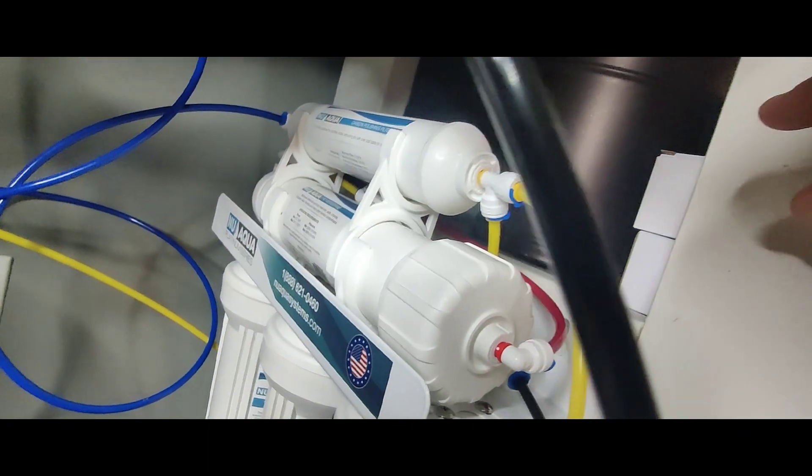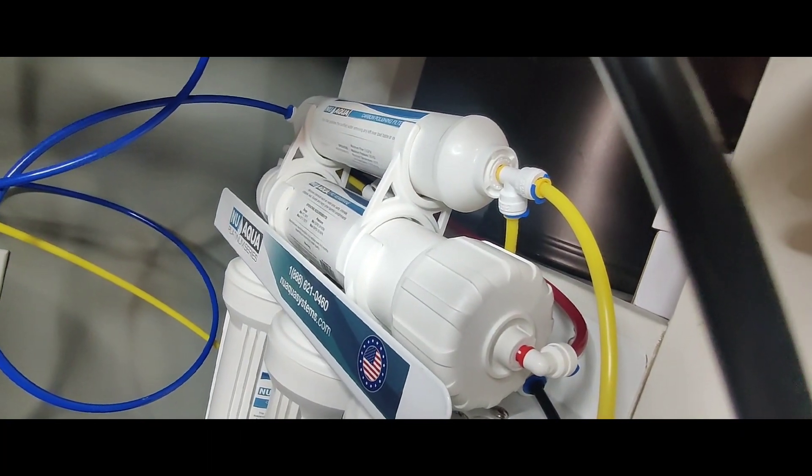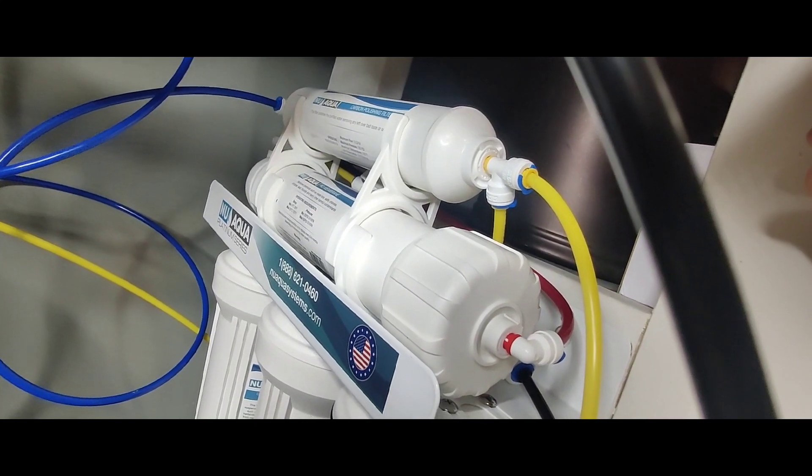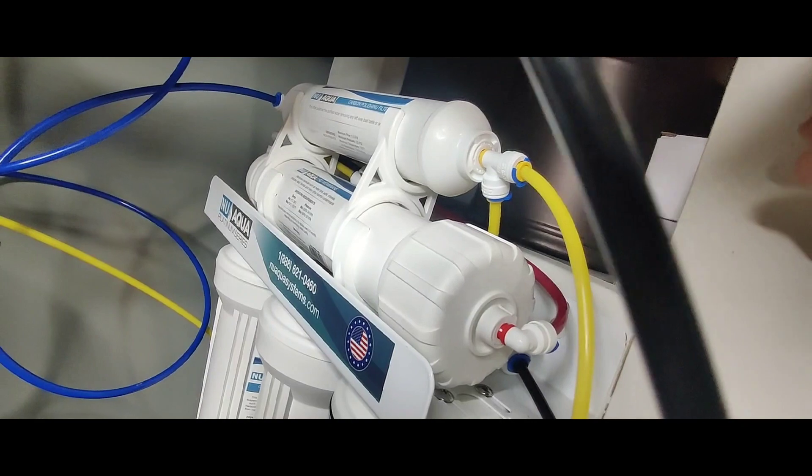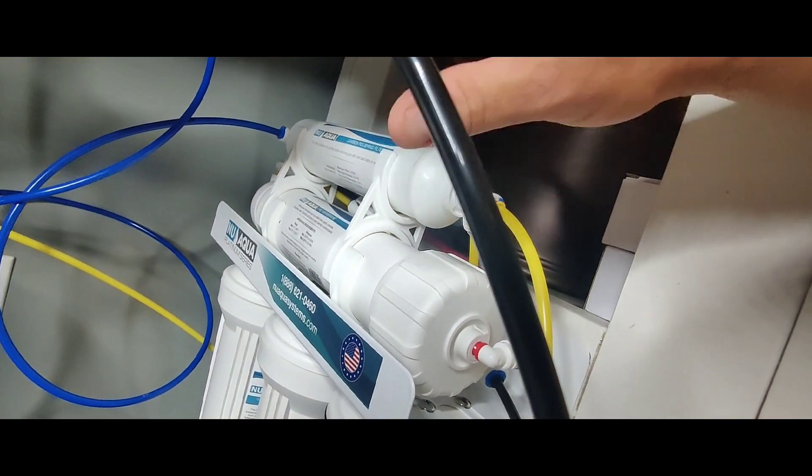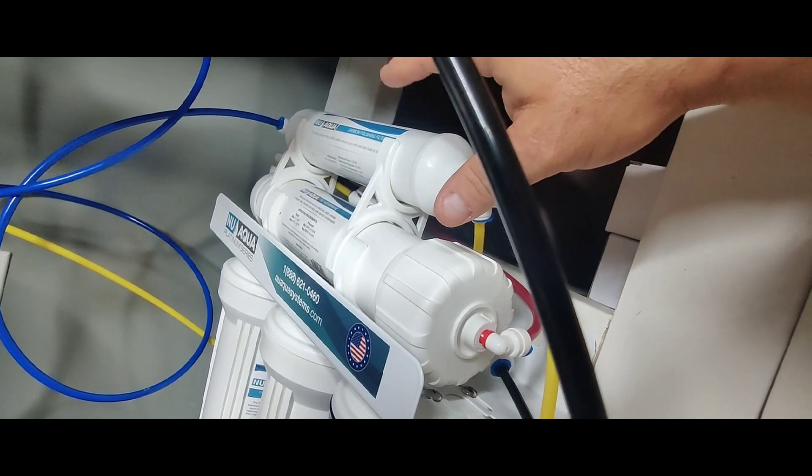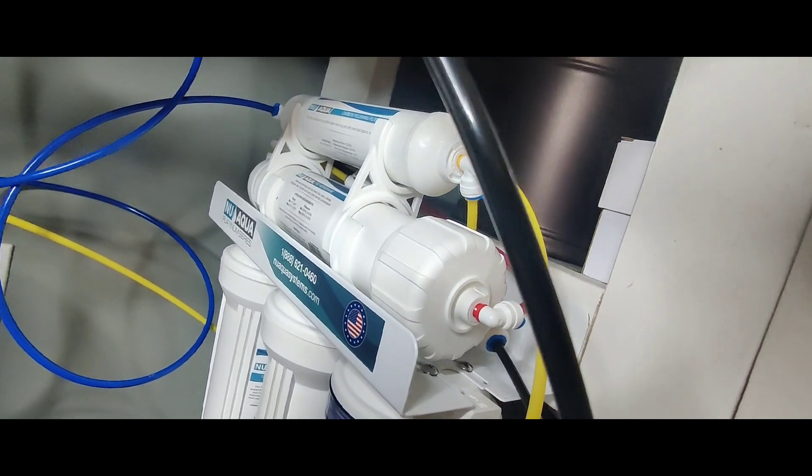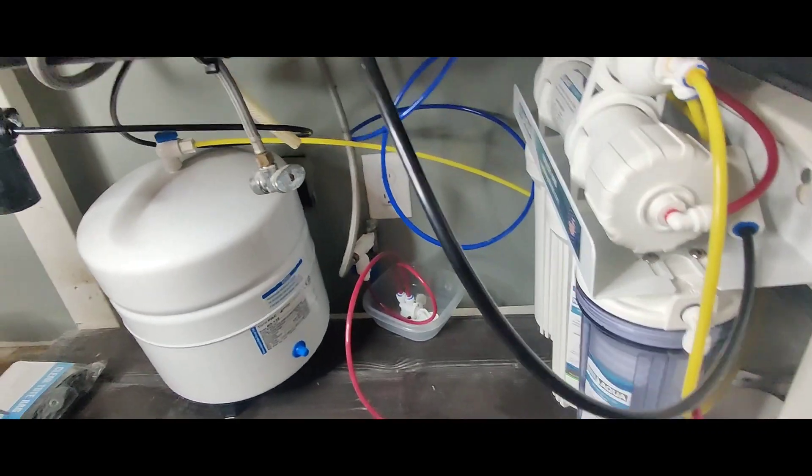This one right here removes chemicals such as metal, ions, salts, chlorine, copper, lead, fluoride, and many other harmful contaminants. And this filter right here just polishes water, makes it taste better, removes bad taste, stuff like that. So, basically what you got is, you've got your water that goes into that white fitting.